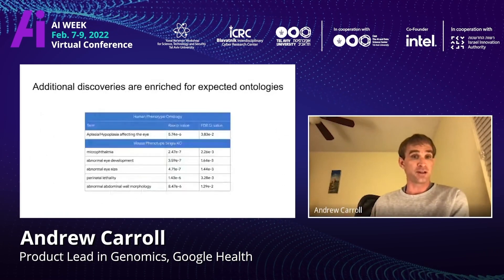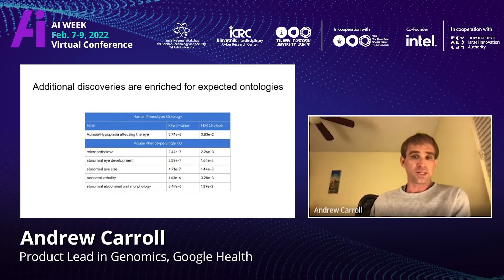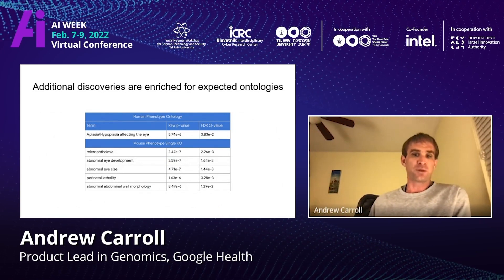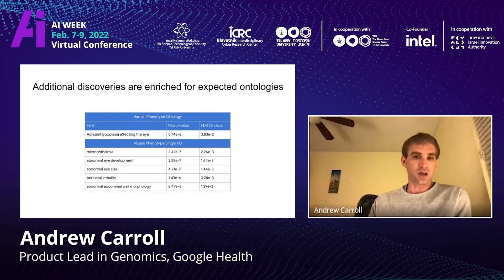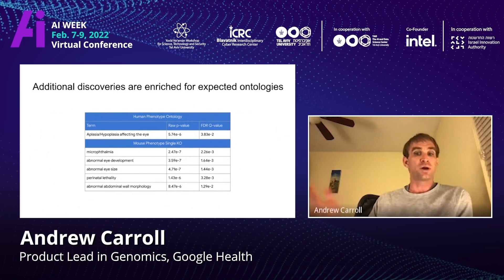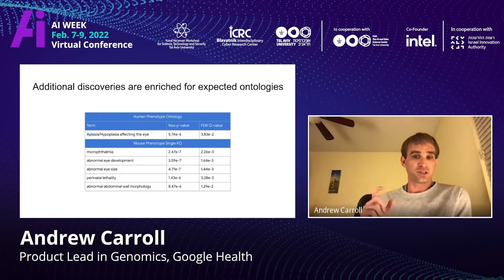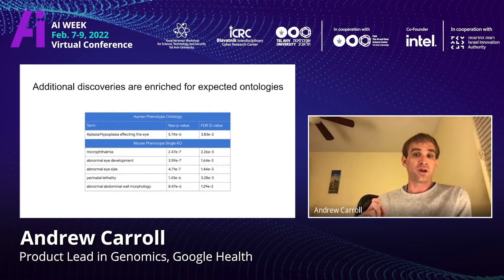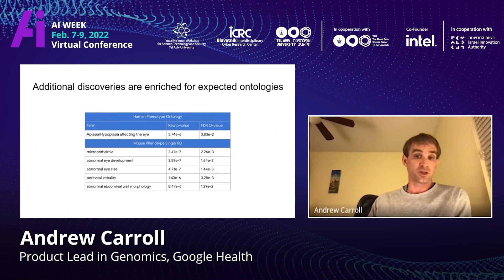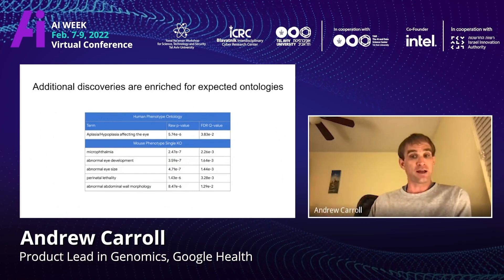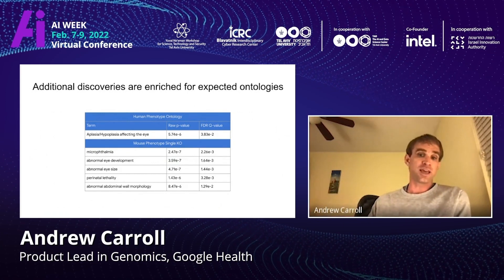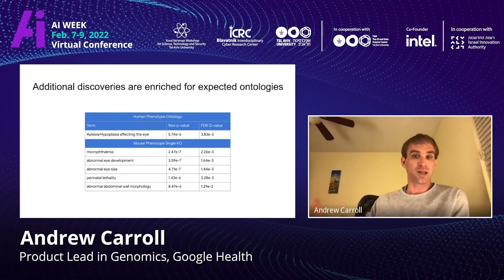These additional hits are potentially highlighting novel biology. Importantly, we can tell that these genes appear to be relevant because we can take the ontologies listed about these in both human biology and mouse biology, and see enrichment for the terms we expect to be present. This is a good way of anchoring the predictions of the model in the underlying biology, because the model would never have seen this genetic data during training — it's a good indication that it's actually tapping into underlying reality.